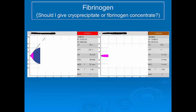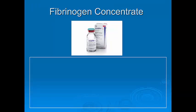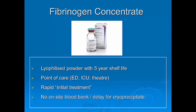For example, a patient with a FibTEM A5 of 6mm has a recommended initial dose of 20 units of cryoprecipitate or 4 grams of fibrinogen concentrate — and if the bleeding continues, they will often need more. Fibrinogen concentrate is widely used in Europe and increasingly in some centres in Australia. It is a dried powder with a 5-year shelf life, doesn't need cross-matching, and can be kept at the point of care — for example, the emergency department, theatre, or ICU. It can be used to more rapidly correct fibrinogen, especially in situations where a large dose of cryoprecipitate would be requested, and may be very useful in centres without on-site blood banks.